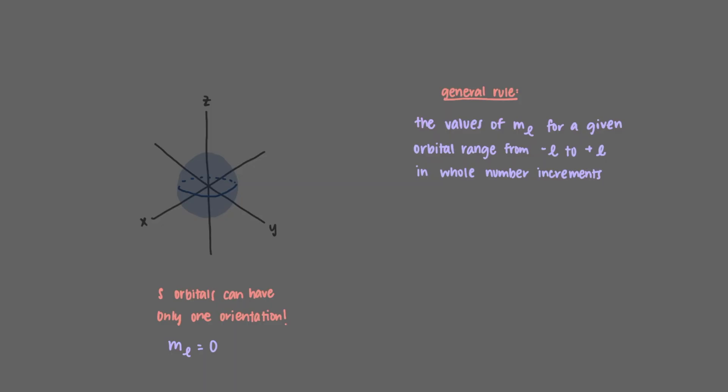In general, the rule is that the values of m sub l for a given orbital range from minus l to plus l in whole number increments.